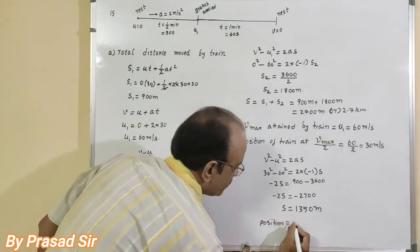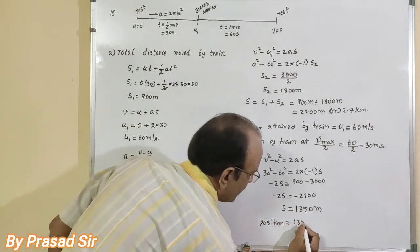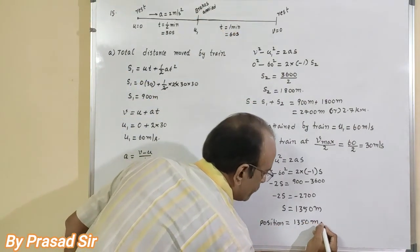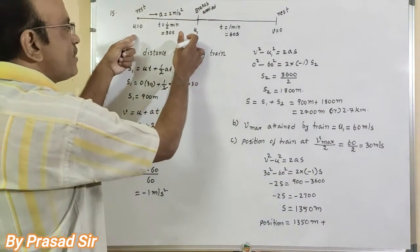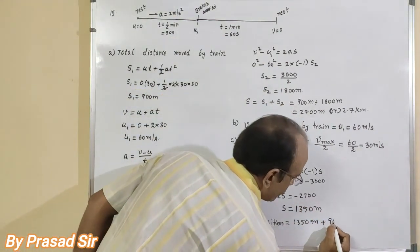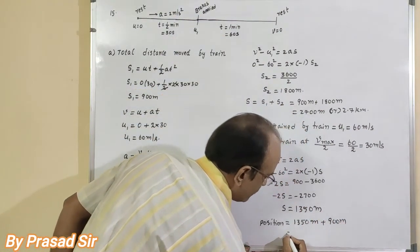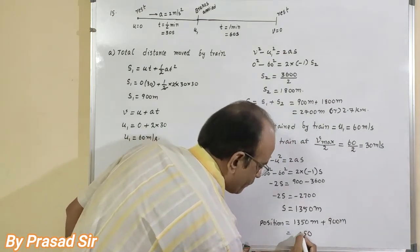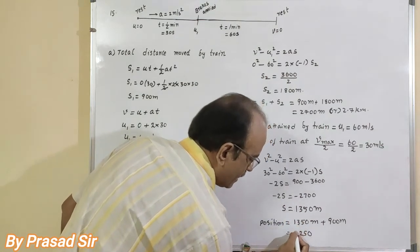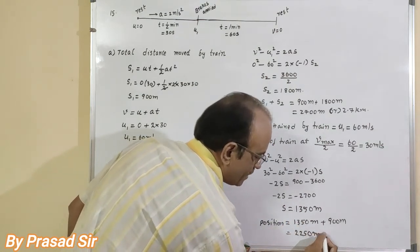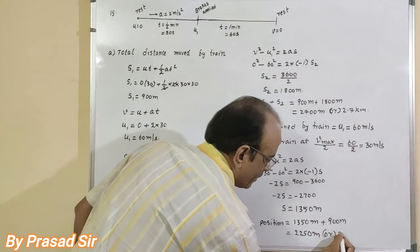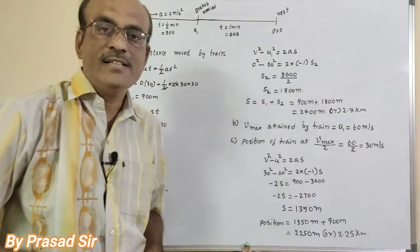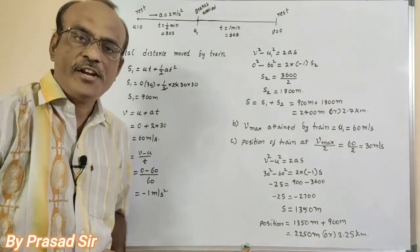The position of the train from the start is 900 meters (S1) plus 1350 meters = 2250 meters, or 2.25 kilometers. This is the solution for question number 15.